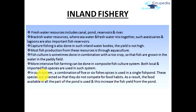Fish culture is sometimes done in combination with rice crops so that fish are grown in water in a paddy field. In composite fish culture systems, both local and imported fish species are used. A combination of five or six fish species is used in a single fish pond. These species are selected so that they do not compete for food, meaning food available in all parts of the pond is used, increasing the fish yield from the pond.